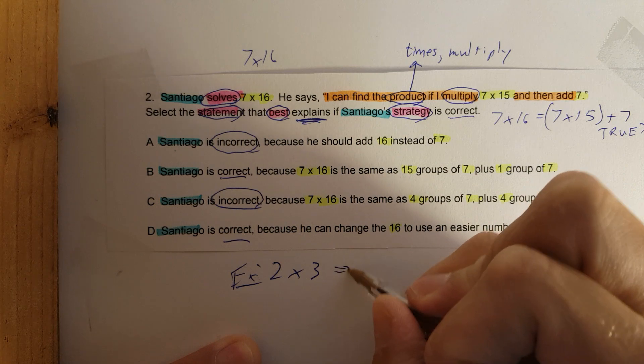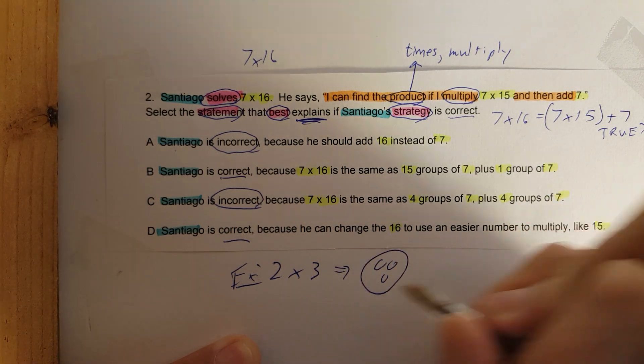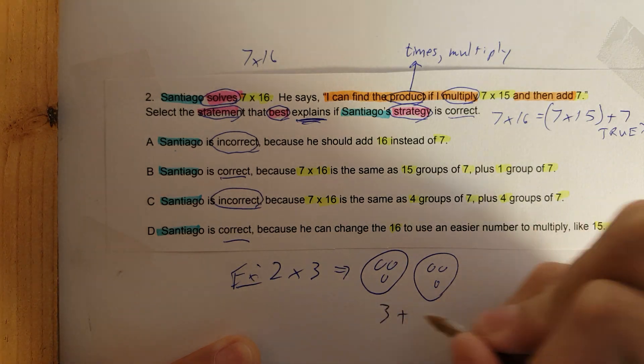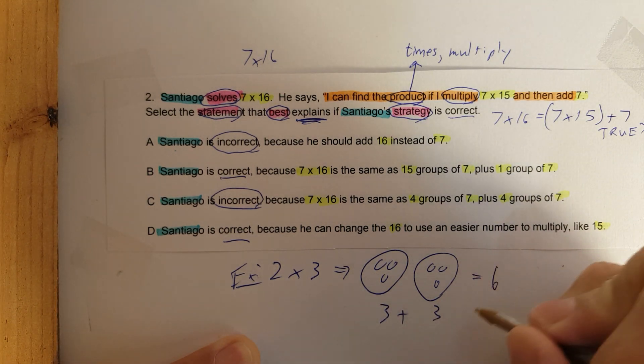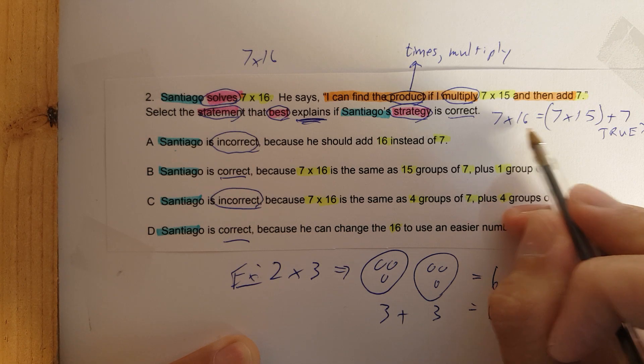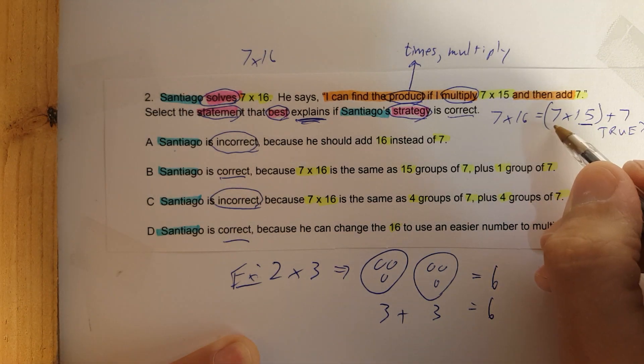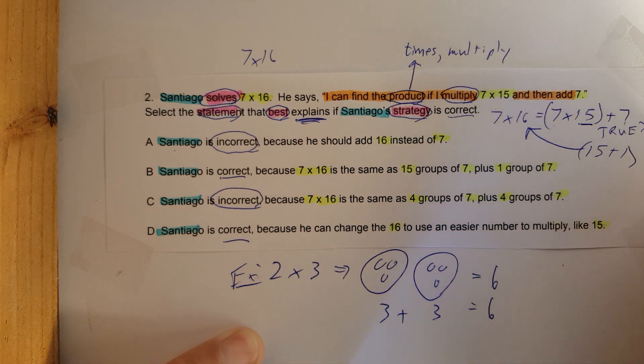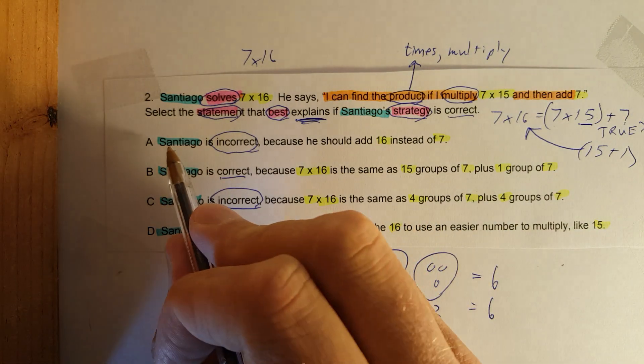2 times 3 is the same thing as one group of 3 plus another group of 3. So multiplying is just a fast way of adding groups. So let's go to that. If 7 times 16, we have 15 groups now of 7, and you would just have one more group of 7. So that would technically be like 15 plus 1. 16 is 16. There's 16 groups, so we know this is true.